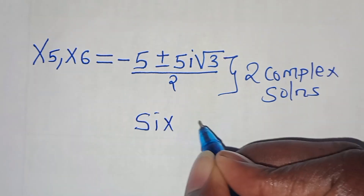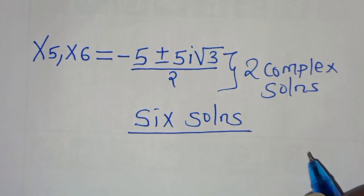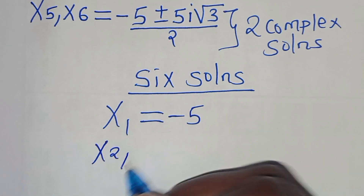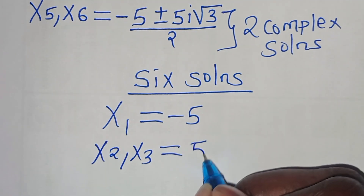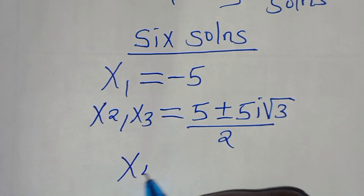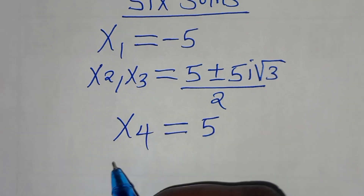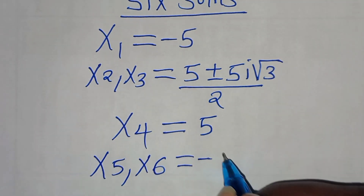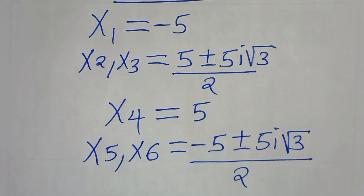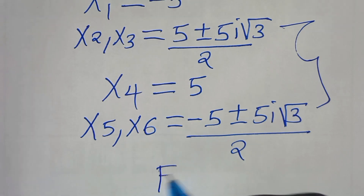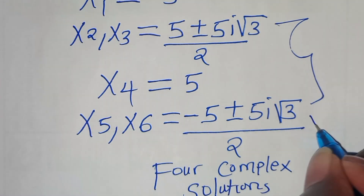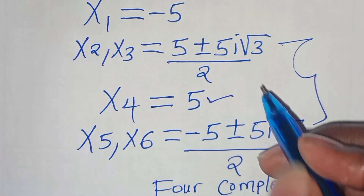In total, we have six solutions to this exponential problem. x₁ = −5, x₄ = 5 are the two real solutions. x₂, x₃ = (5 ± 5i√3) / 2 and x₅, x₆ = (−5 ± 5i√3) / 2 give four complex solutions.